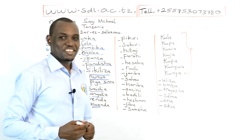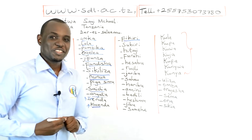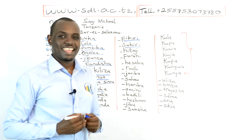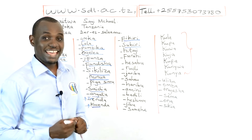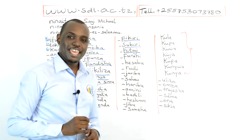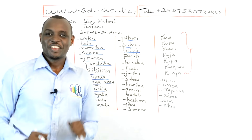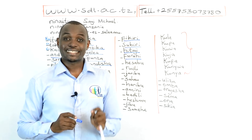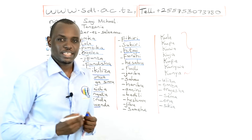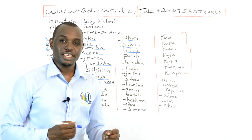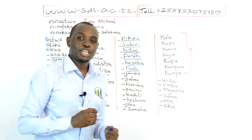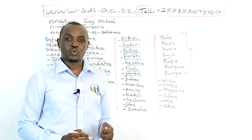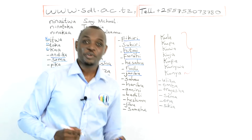Fikiri means think; Ku Fikiri means to think. Subiri means wait; Ku Subiri means to wait. Hitaji means need; Ku Hitaji means to need. Furahi means be happy; Ku Furahi means to be happy. Hesabu means count; Ku Hesabu means to count. Rudi means come back or return; Ku Rudi means to come back, to return. Jaribu means try; Ku Jaribu means to try. Sahao means forget; Ku Sahao means to forget.